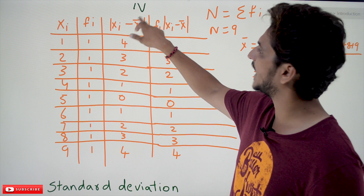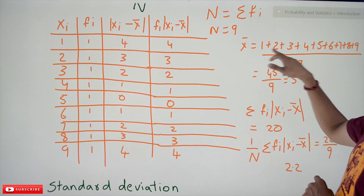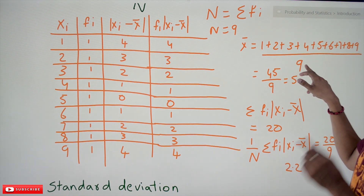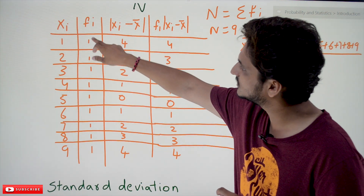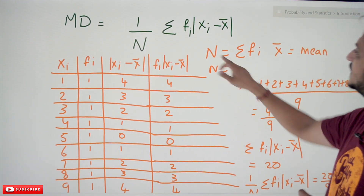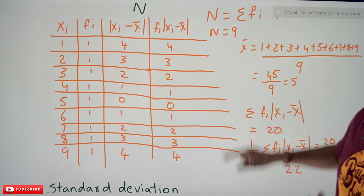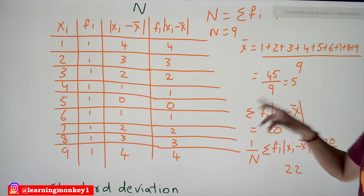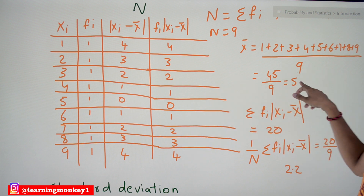To find (Xᵢ minus X̄) we first need X̄, the mean. Mean = (1 + 2 + 3 + ... + 9) divided by 9 — there are 9 data points. N equals the summation of frequency values; since all frequencies are 1, N equals 9. So X̄ = 45 ÷ 9 = 5.